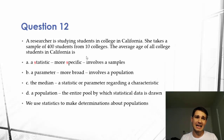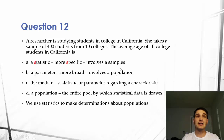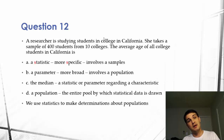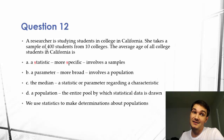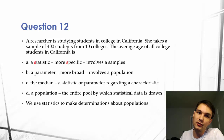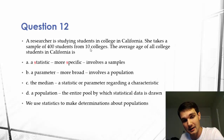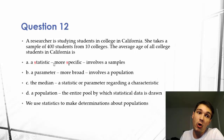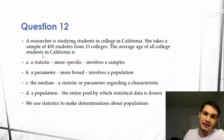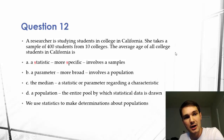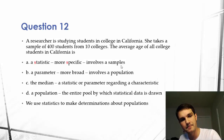This is an excellent question because you should be able to identify each term. Let's go over that one more time. The statistic would be the average age of the 400 students from the 10 colleges. The sample would be the 400 students from the 10 colleges. The parameter would be the average age of all college students in California — so B is the answer. And the population would be all college students in California.